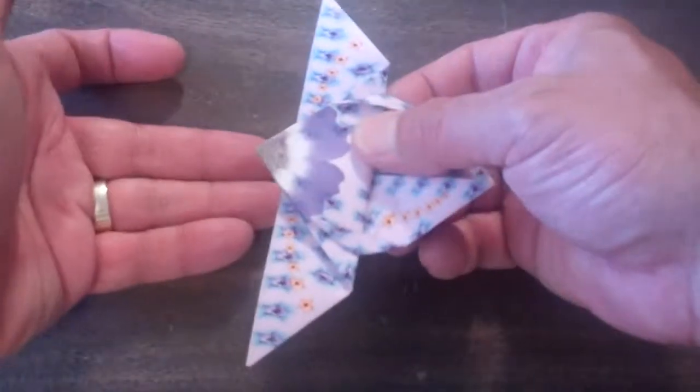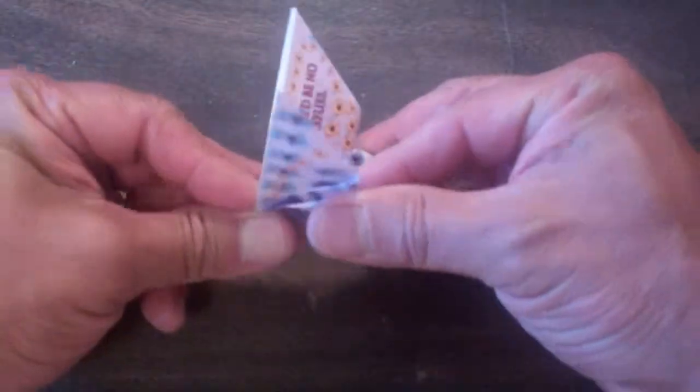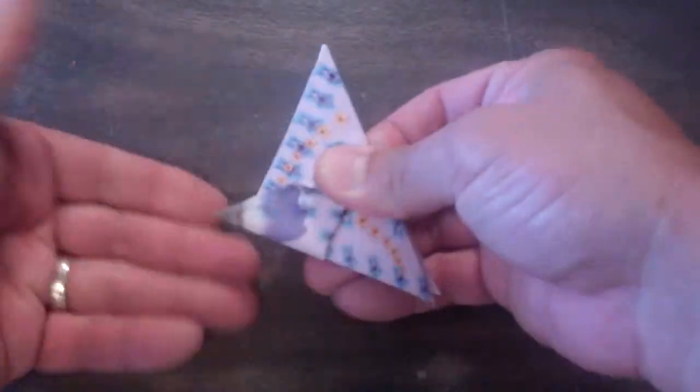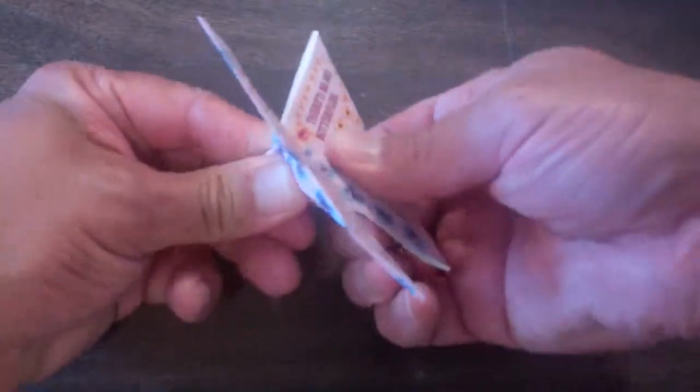We're now just about done. All we need to do is to fold the butterfly in half, and then open up its wings.